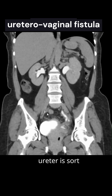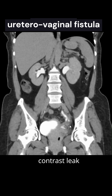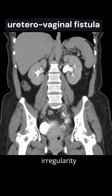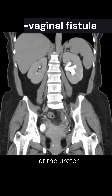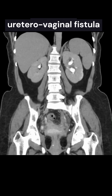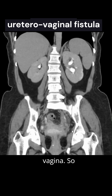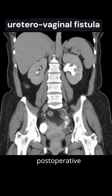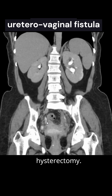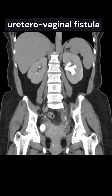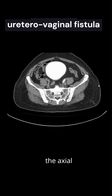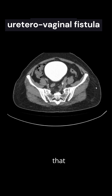As we trace the ureters, the right ureter is visible here, while the left ureter appears irregular with some periureteric leak of contrast. There is periureteric contrast leak and irregularity of the ureteric wall, and this contrast pooling here is within the vagina. This is a post-operative case following hysterectomy.